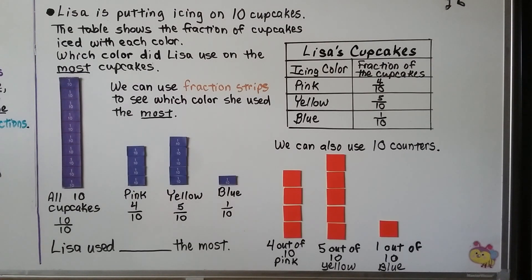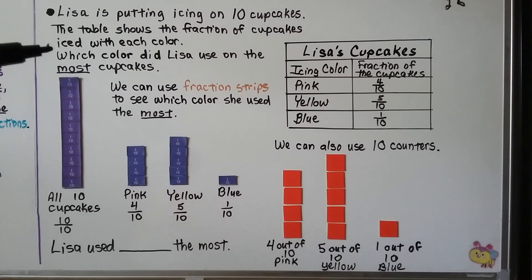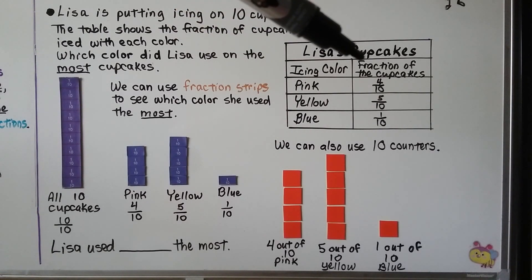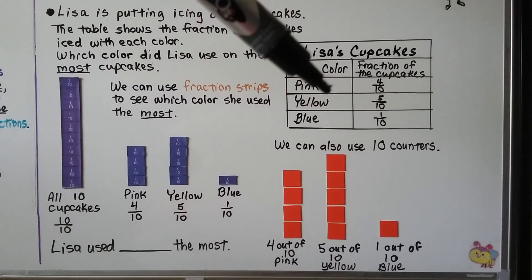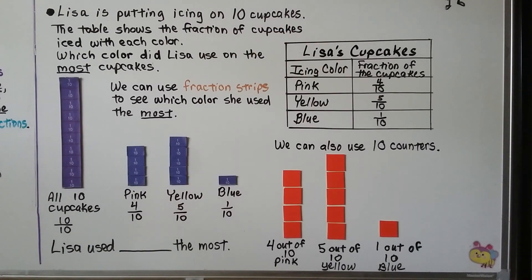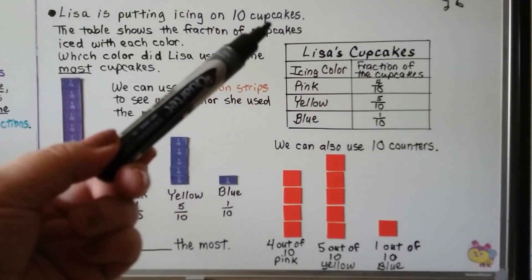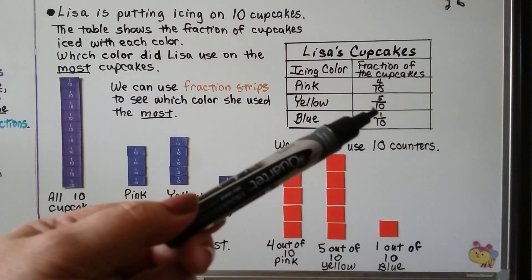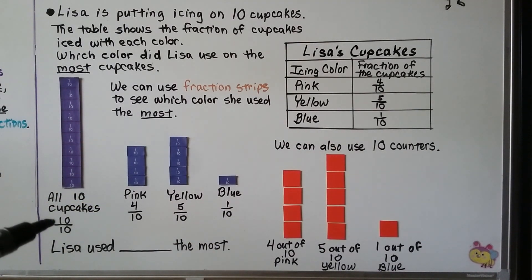Lisa is putting icing on ten cupcakes, and the table shows the fraction of cupcakes iced with each color. Which color did Lisa use on the most cupcakes? Looking at the frequency table: the icing colors are pink, yellow, and blue. Four-tenths — four out of ten — were pink. Five-tenths — five of the ten — were yellow. And one-tenth — one of the ten — was blue. Because ten cupcakes is the whole thing, we add the numerators: four plus five is nine, plus one more is ten, equaling all ten cupcakes — ten-tenths, one whole thing. The whole is split into unit fractions of one-tenth, and there are ten of them.